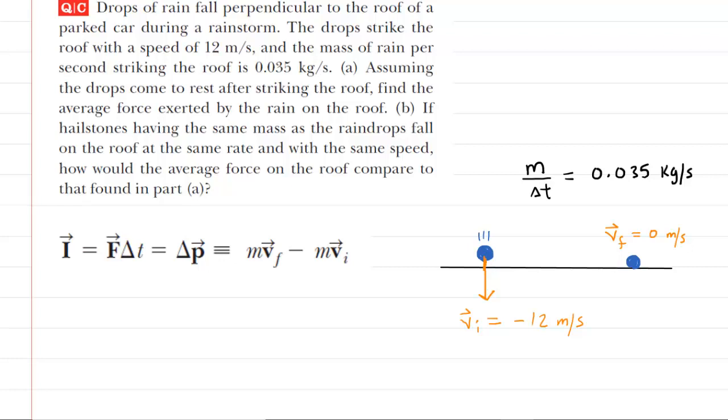The first thing that we may wish to do in order to solve the question is to write down some of the quantities that are given to us in this question. For example, we are told that these raindrops strike the roof of the car with a speed of 12 meters per second.